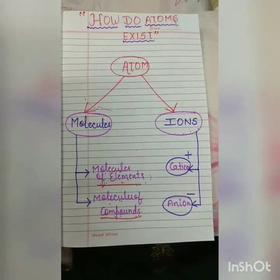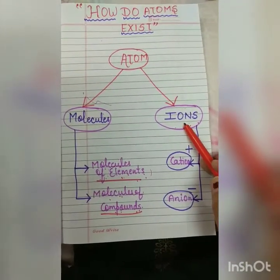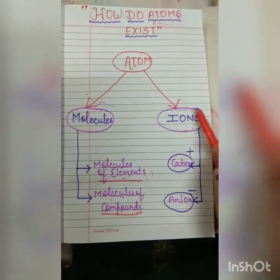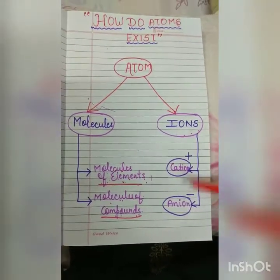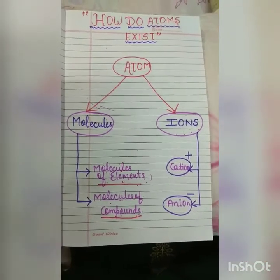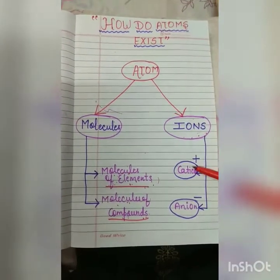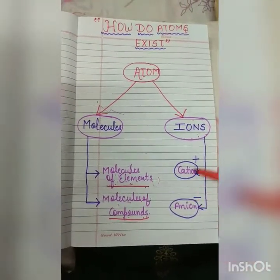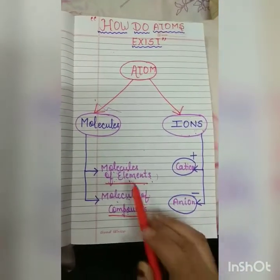Now, the second form in which an atom exists is known as ions. When we talk about ions, these ions are charged particles which are formed when an atom loses or gains some electrons. So these ions are of two types, that is cations and anions. We will be discussing these two types of ions later on.